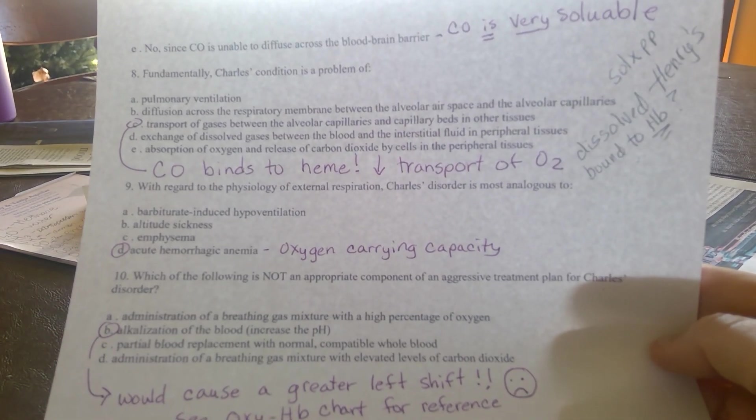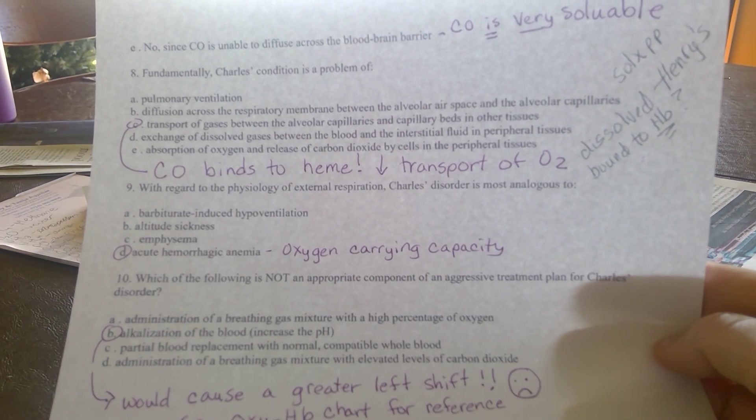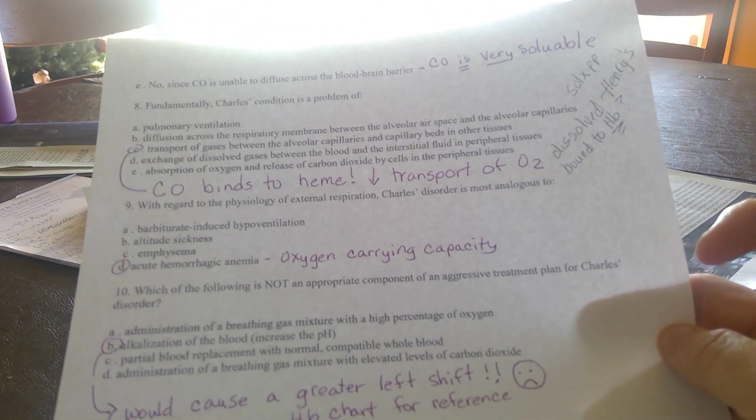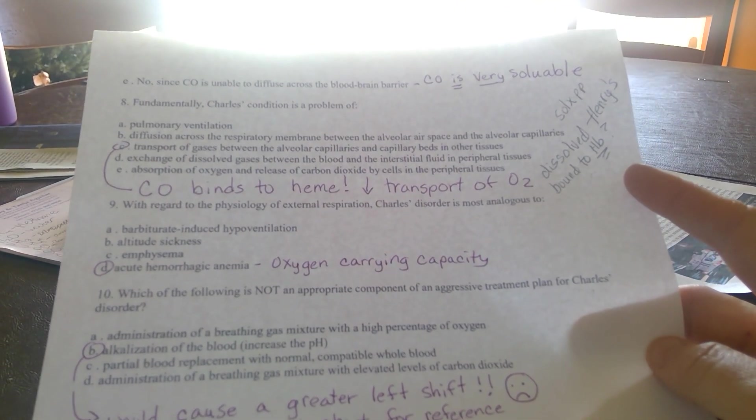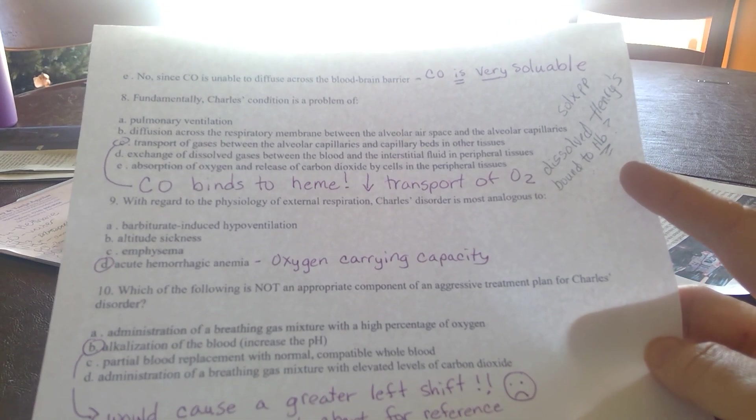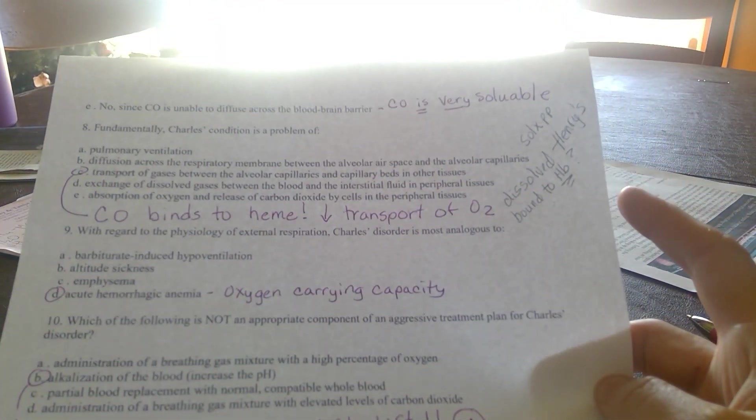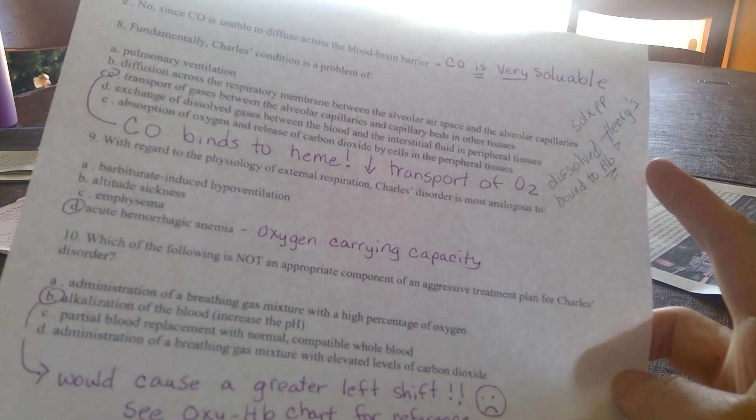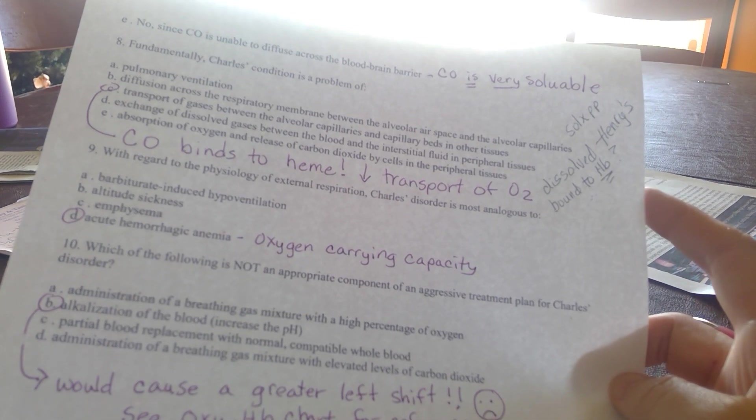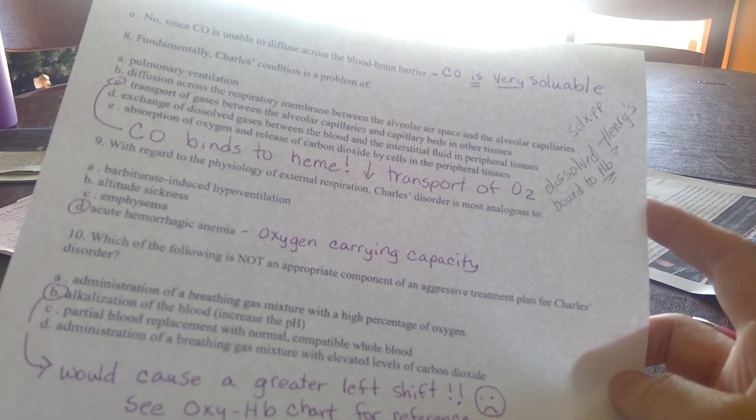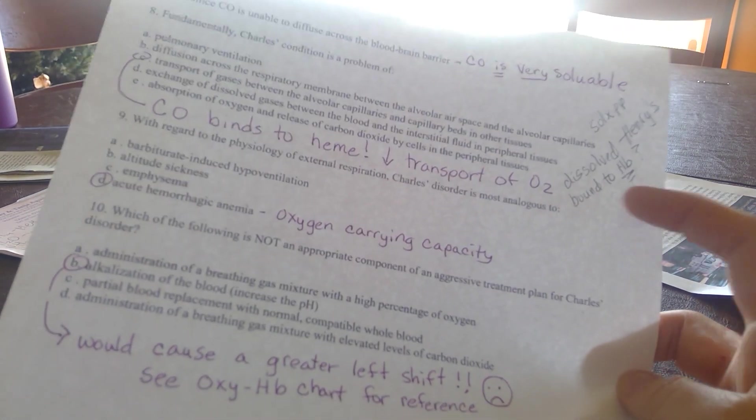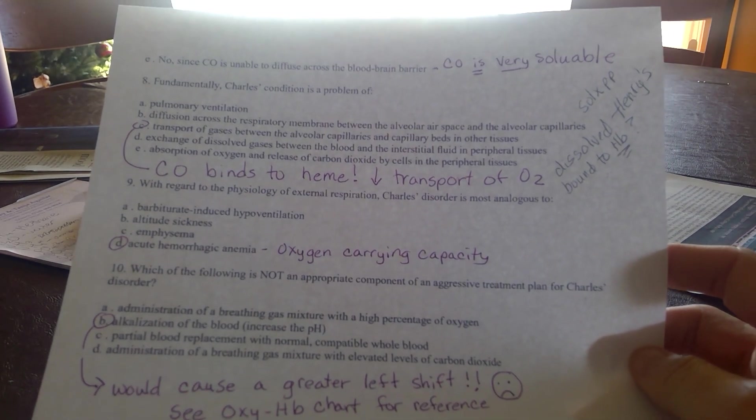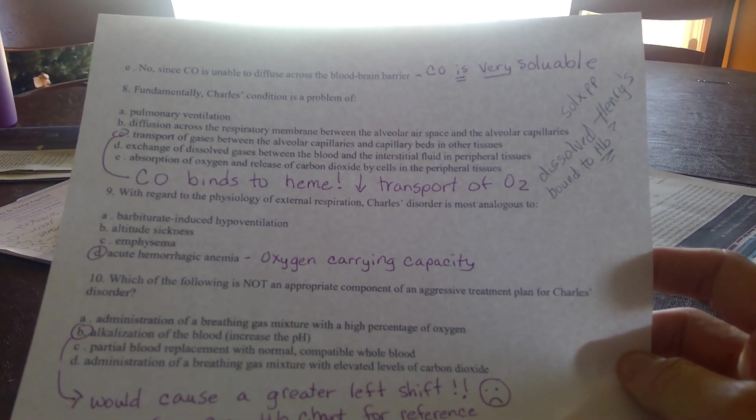Lastly, Charles's condition is fundamentally a problem with transport. Carbon monoxide binds to heme, and that means it's occupying a spot where oxygen should be. How do we transport oxygen? It's either dissolved or bound to hemoglobin. How much is dissolved? That's according to Henry's law, which states that solubility times the partial pressure dictates the concentration of a gas in liquid.